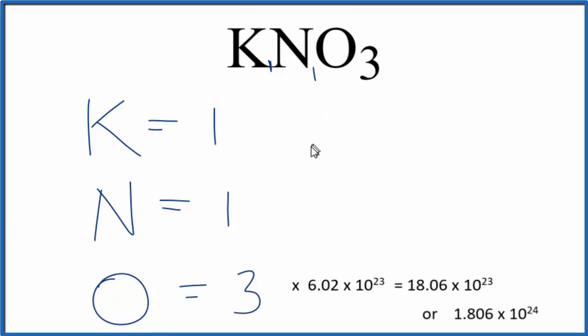If you wanted to figure out the number of nitrogen atoms in one mole of KNO3, that would just be Avogadro's number, because you only have one nitrogen atom. This is Dr. B with the number of atoms in potassium nitrate. Thanks for watching.